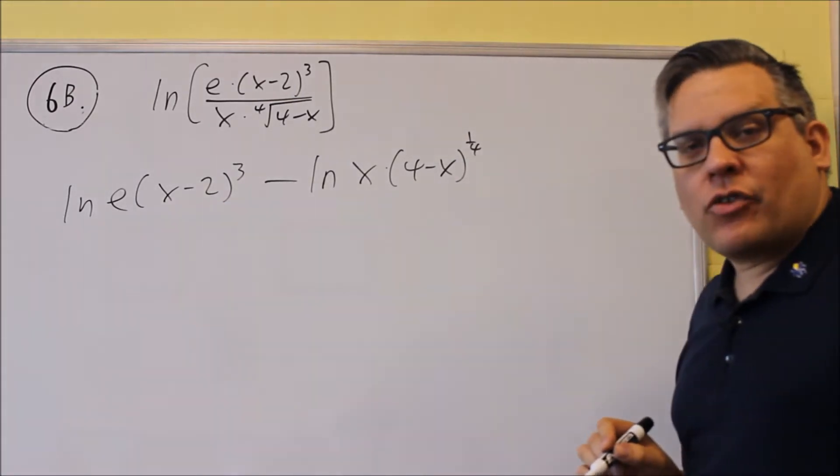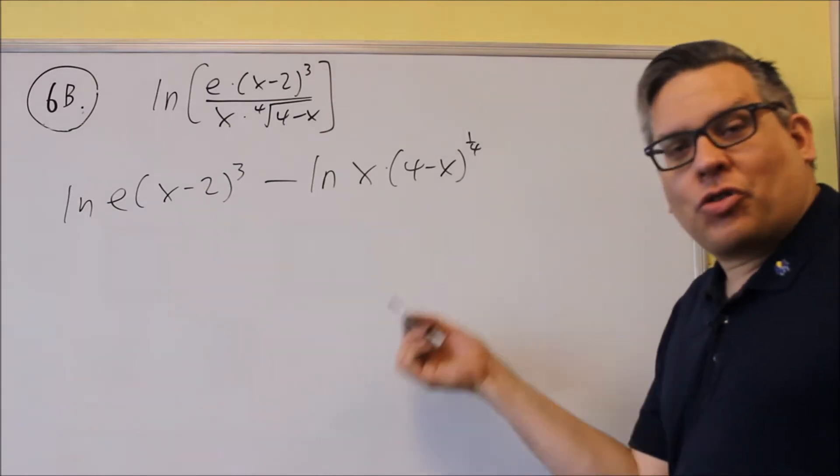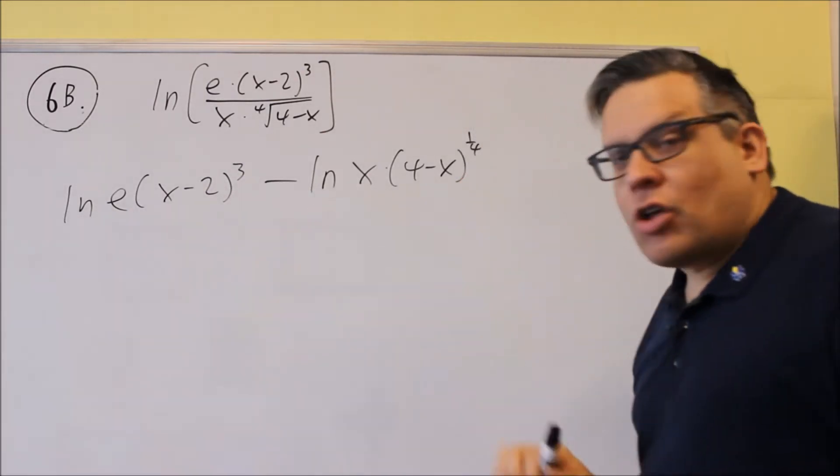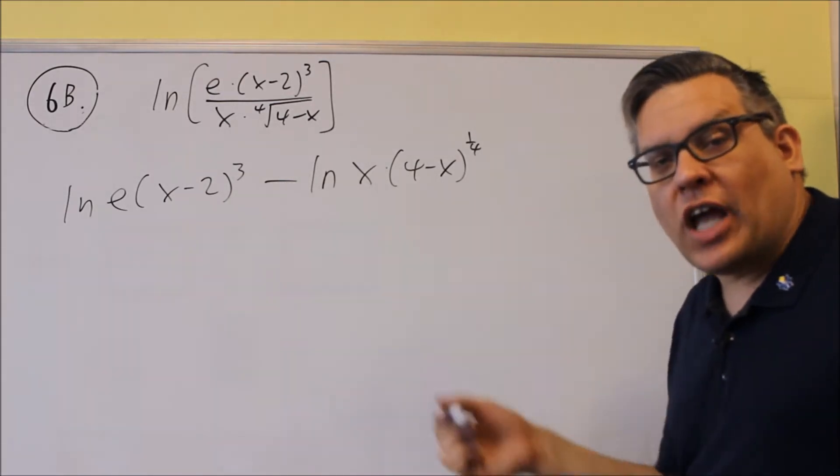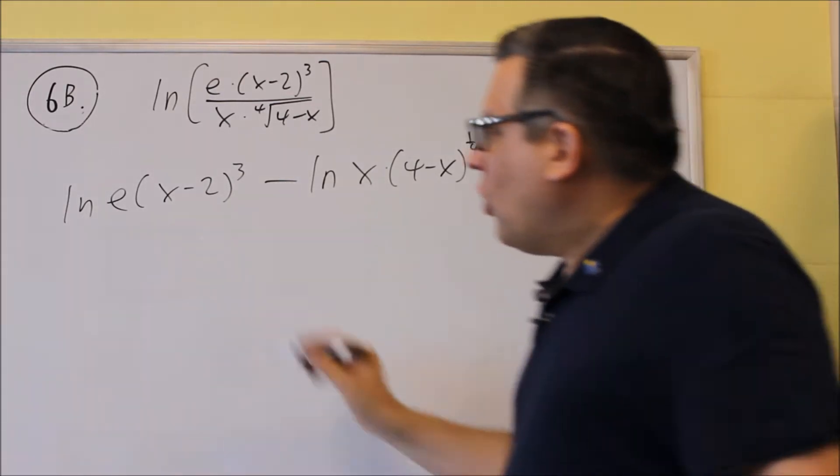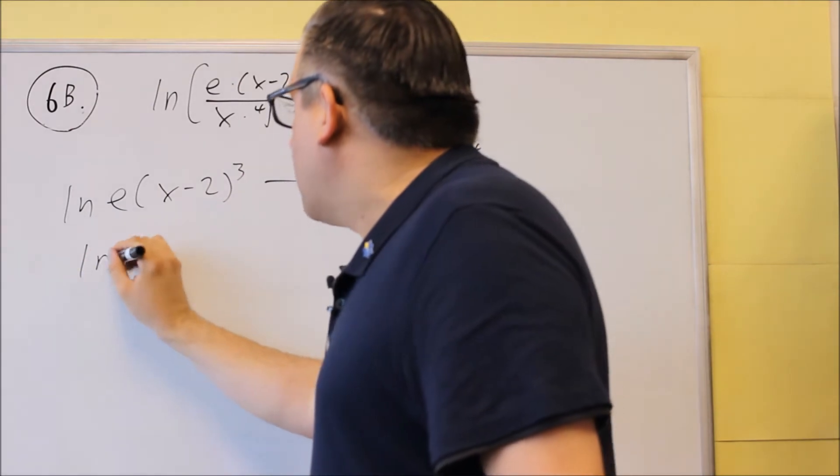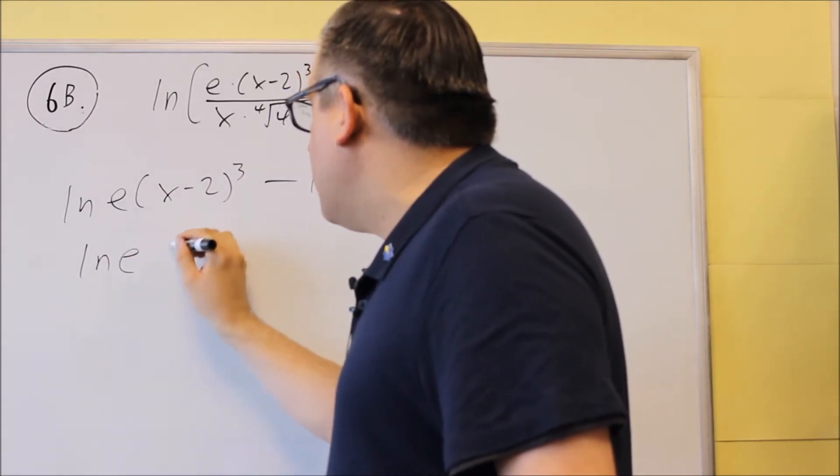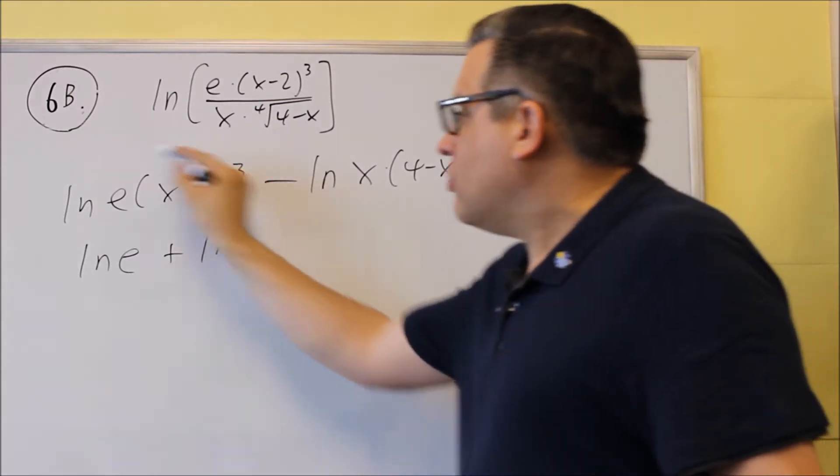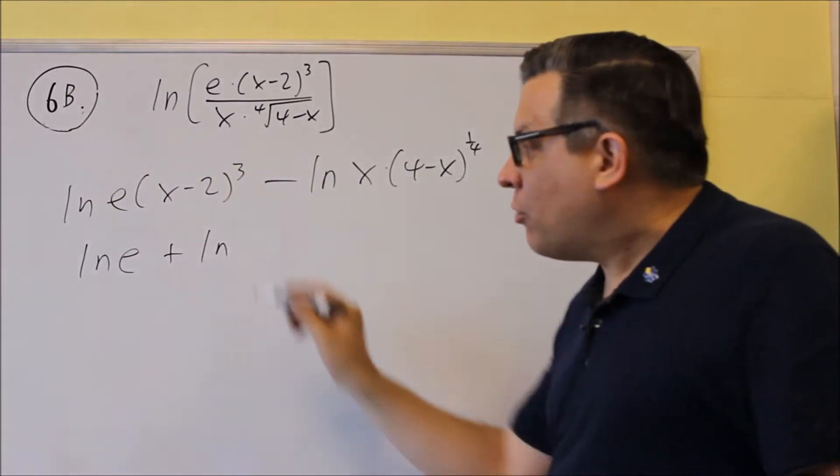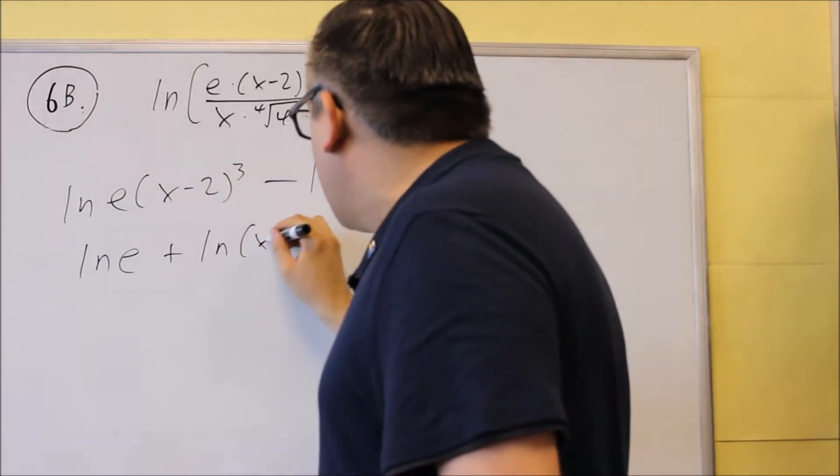Notice that it doesn't matter if you have log base 2 or 3, or in this case, the natural log is a log base e, so that's why we can still use log properties even if we have a natural log. This is multiplication, we have to break that up and turn it into addition. And so again, like I mentioned before, the 3, you can't just jump it all down in front of the natural log, you've got to break it up into two separate things.